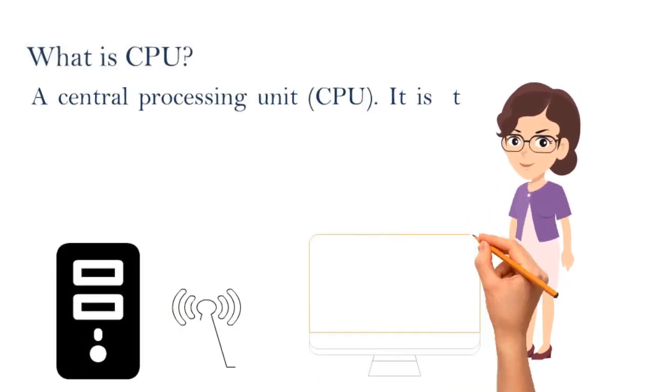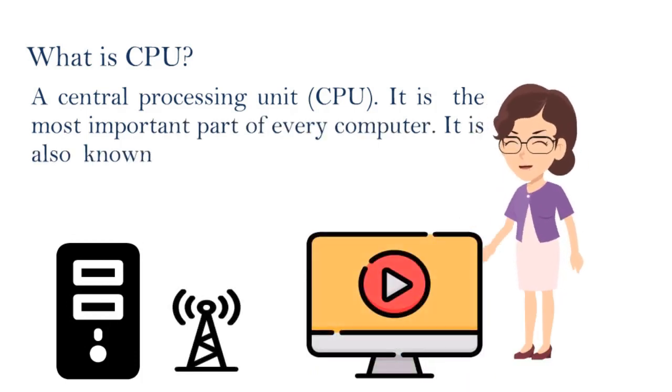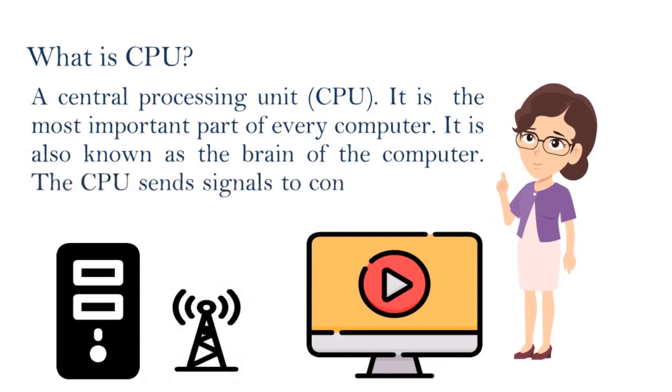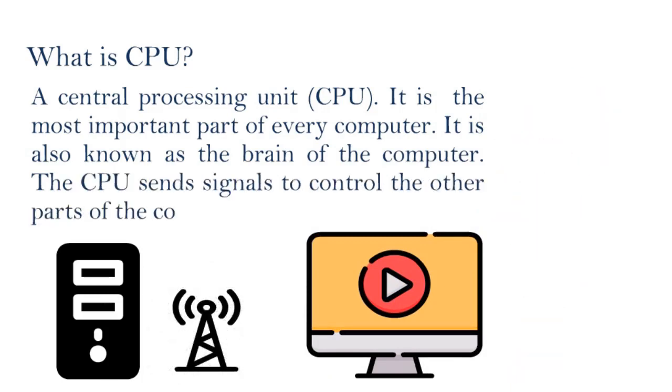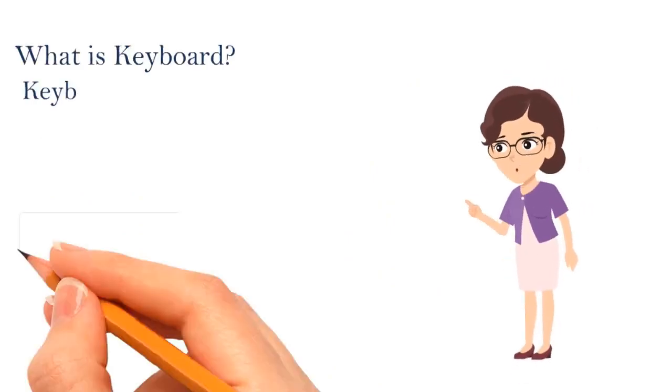Number two: CPU. CPU stands for Central Processing Unit. It is the most important part of the computer. It is also known as the brain of the computer. The CPU sends signals to control the other parts of the computer.